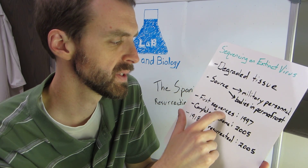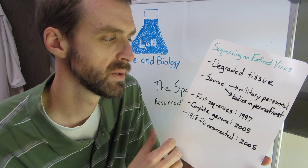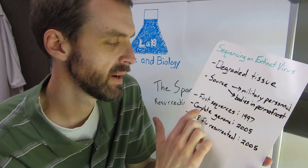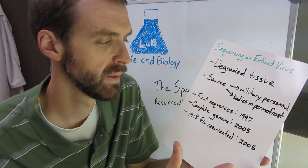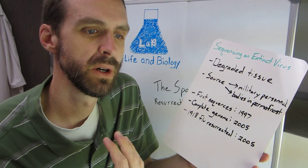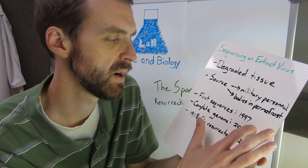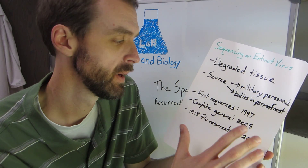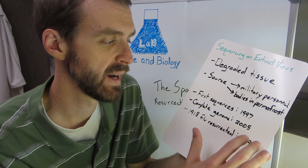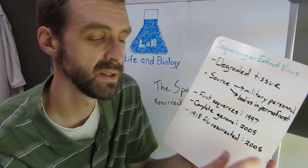The first sequences came out in a publication in 1997 — I'll have links in the show notes to several of these studies. Eight years later, the complete genome of the virus came out. Influenza has a genome of eight RNA segments, and all eight were completed by 2005. The 1918 flu was resurrected also in 2005, which tells you that as soon as you know the sequence, being able to get to the virus is a pretty easy step.